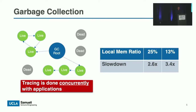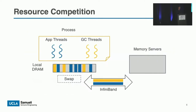This kind of big slowdown comes from two big problems caused by concurrent tracing. The first problem is resource contention. Application threads and GC threads execute concurrently and access different data. Pages swapped in for GC's heap traversal are often not used in the near future and hence evicted by the application, and conversely. Due to evicting each other's pages, the application and GC both suffer from severe local memory misses and compete for RDMA bandwidth to do page swapping.